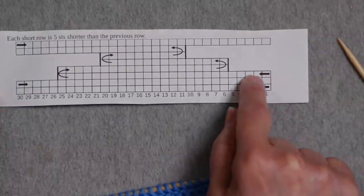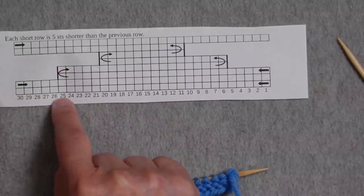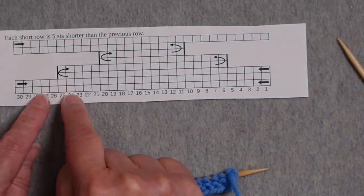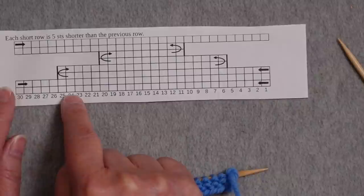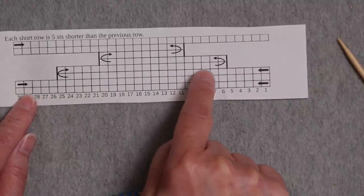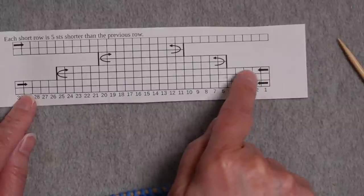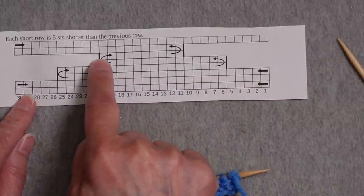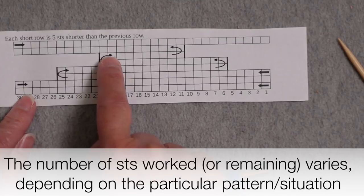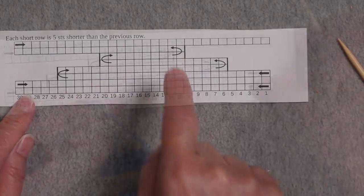In this case, I'm going to work until I've worked 25 stitches, leaving five stitches remaining. Then I'm going to turn and work back in the other direction until there are five stitches remaining again. I'm going to keep working back and forth like this, five stitches short of where I worked the previous time.